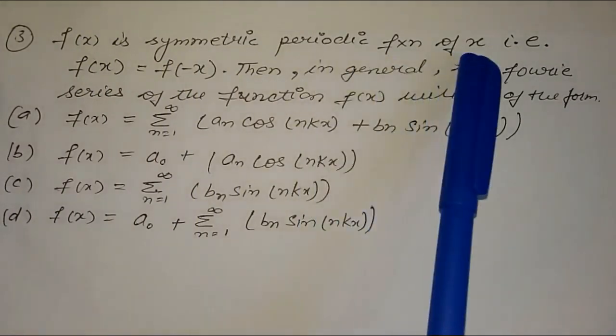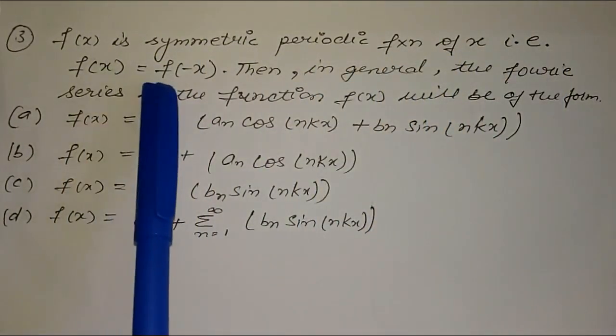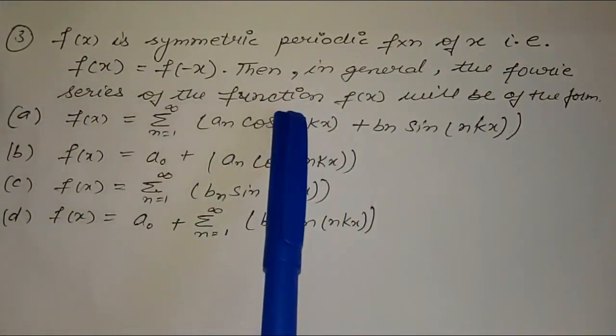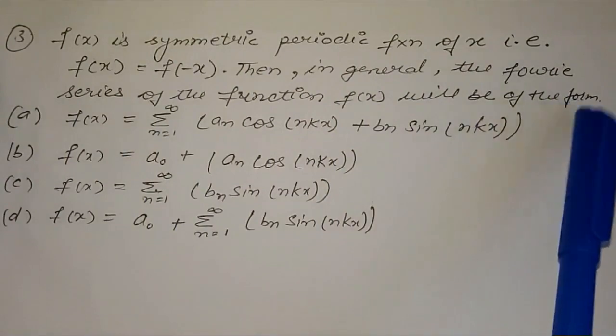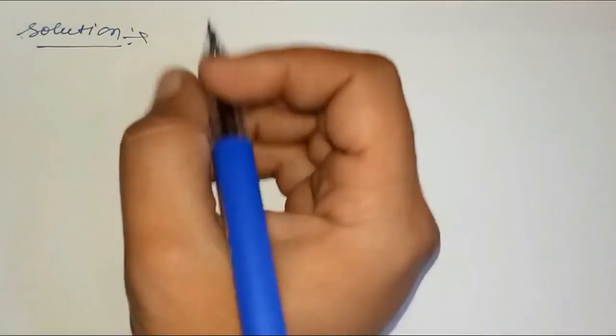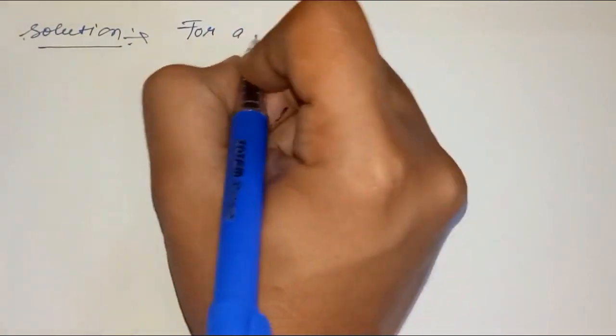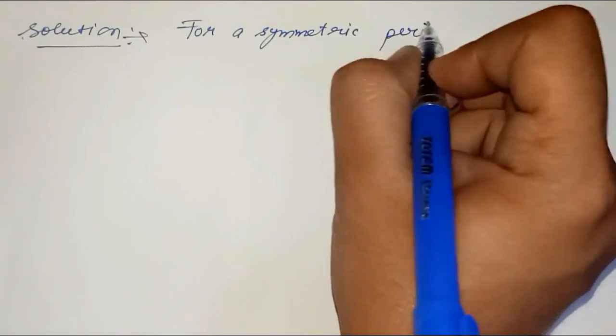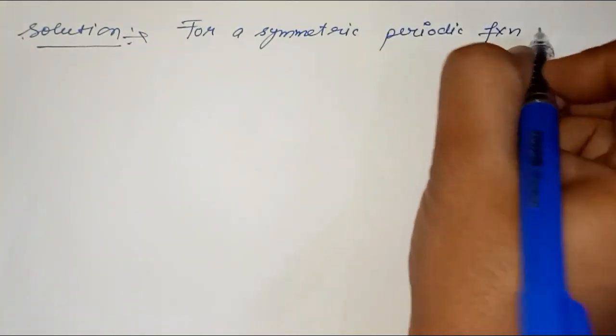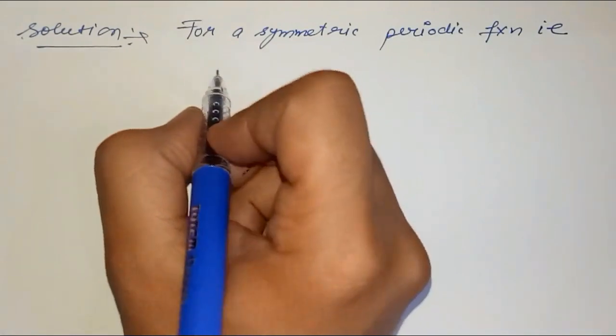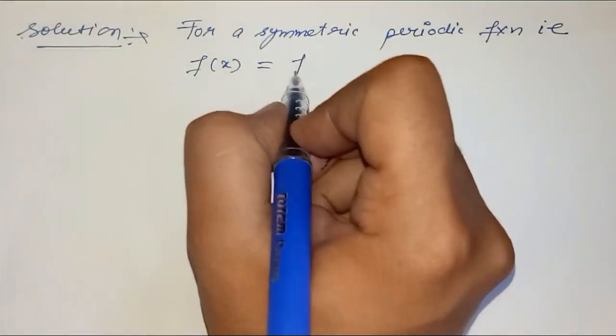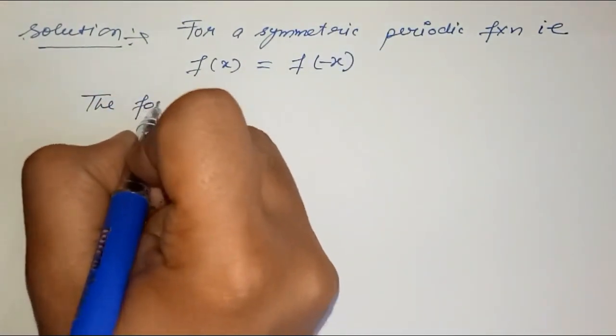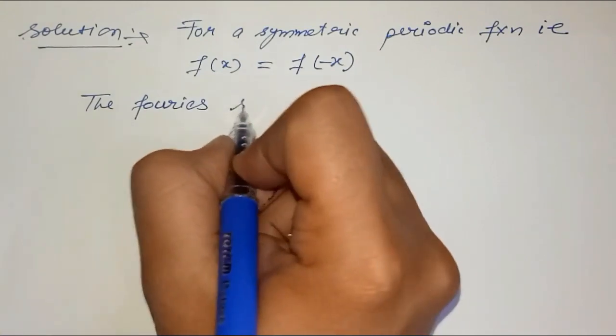The next question is: if f(x) is a symmetric periodic function of x, that is f(x) equals f(-x), then the Fourier series of the function f(x) will be of what form? For a symmetric periodic function where f(x) equals f(-x), the Fourier series...